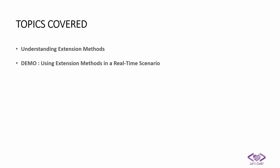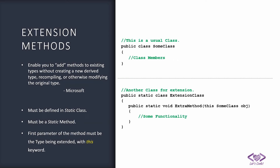So what exactly are extension methods? As per Microsoft, they have defined it as: they enable you to add methods to existing types without creating a new derived type, recompiling, or otherwise modifying the original type. That means if you have a type — any class which exists in your library or any other imported library — and you want to extend it by adding a method, but you don't have access to the code or don't want to recompile that class, then extension methods come in to help.